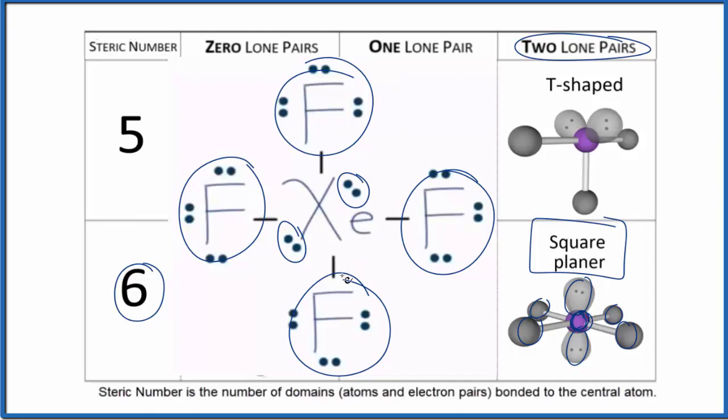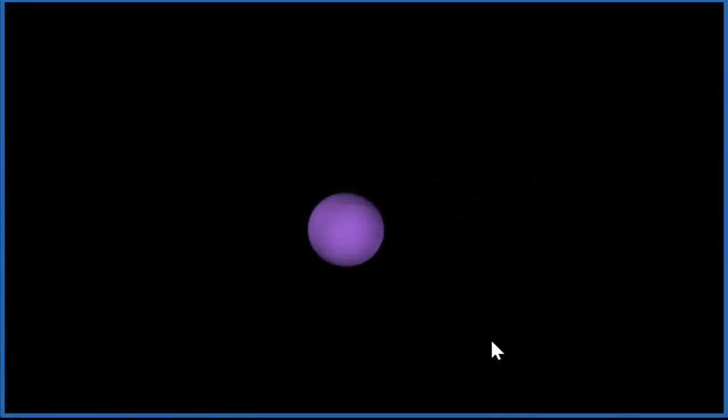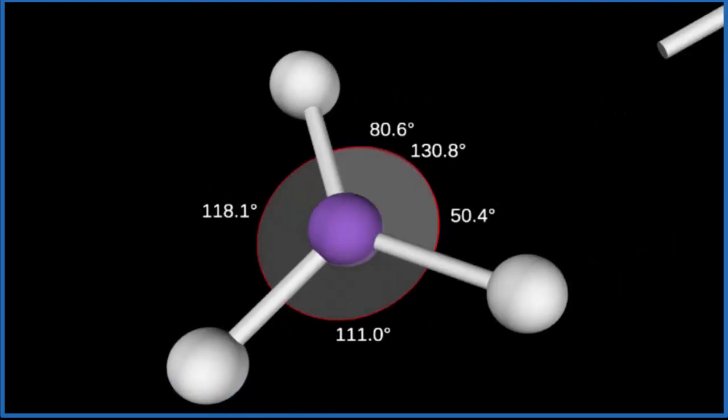Let's look at this in three dimensions. Let's consider the purple the central XE atom, and then we'll add four fluorine atoms. One, two, three, four.